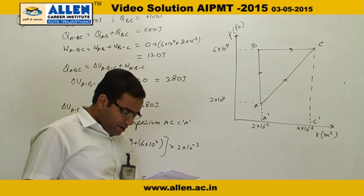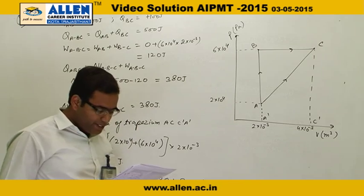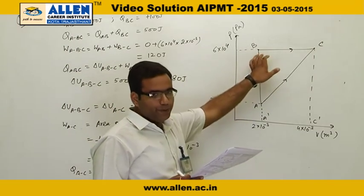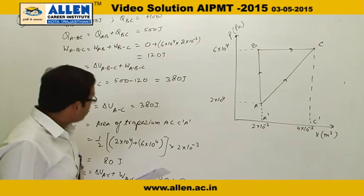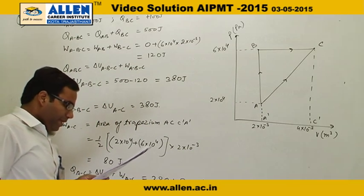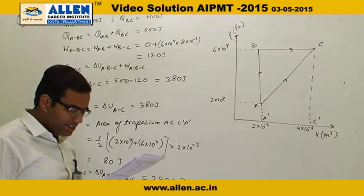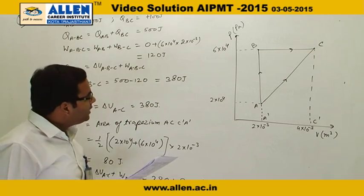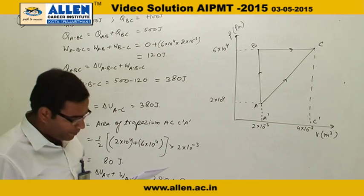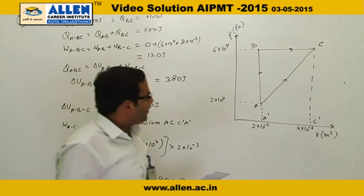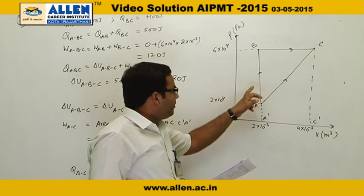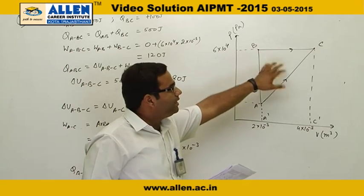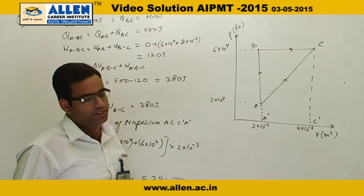Further, 100 joules of heat is added to the system in process B to C. The question asks for the heat absorbed by the system in the process AC. The key idea is that whether we go from path ABC or path AC, the internal energy change will be the same for both paths.